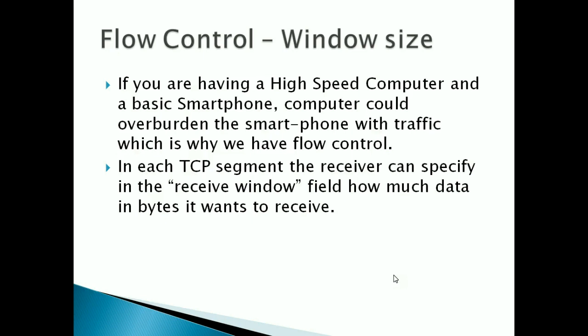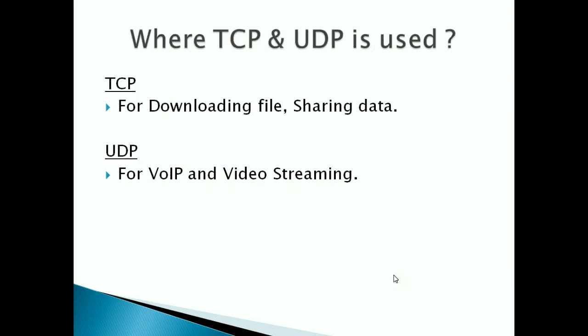The window size works like this: consider a computer sending data to a mobile phone. The computer could overburden the mobile phone with too much data. Each TCP segment has a receive window size so the mobile phone can signal how much data it can receive at a time. This prevents the sender from going beyond a particular size, helping to avoid overburdening the receiver.